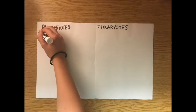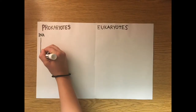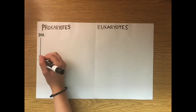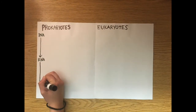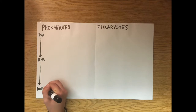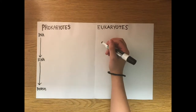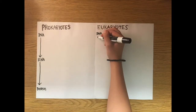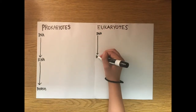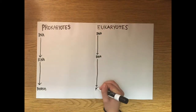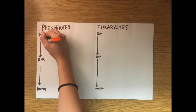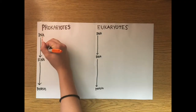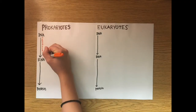Prokaryotes will be on the left side and eukaryotes will be on the right side. Just to review what the central dogma is: we're going from DNA to RNA and then to protein. So let's start with DNA to RNA, which is also known as transcription.